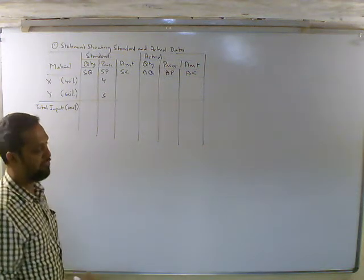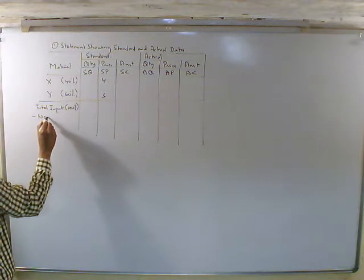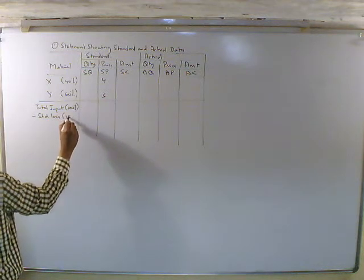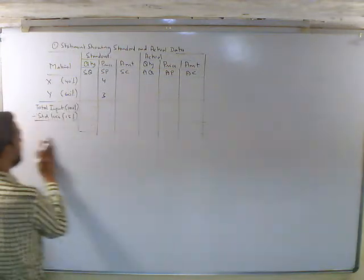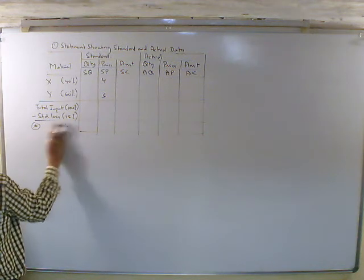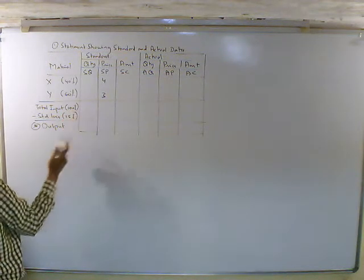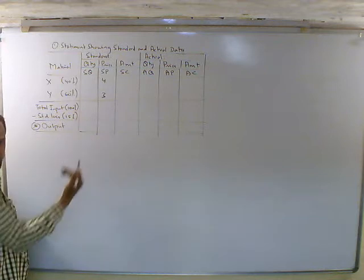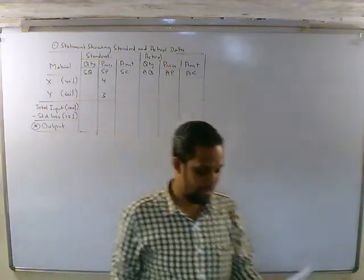There is a standard loss in process of 15%. When this is the standard loss, you can minus it here. Standard loss is 15%, and output equals total input minus standard loss. During December 2008, the company produced 1,700 kg of finished output.